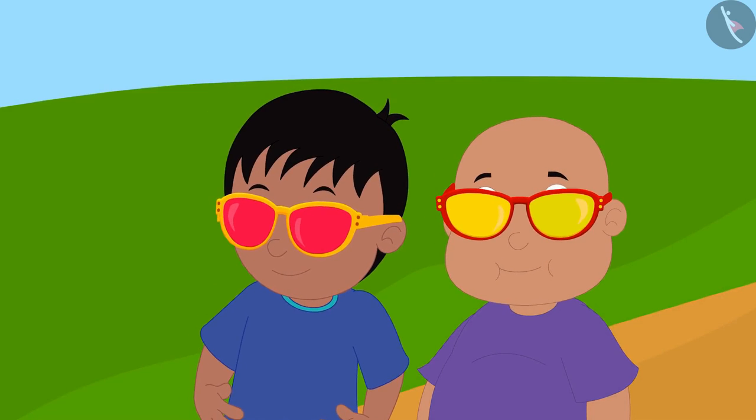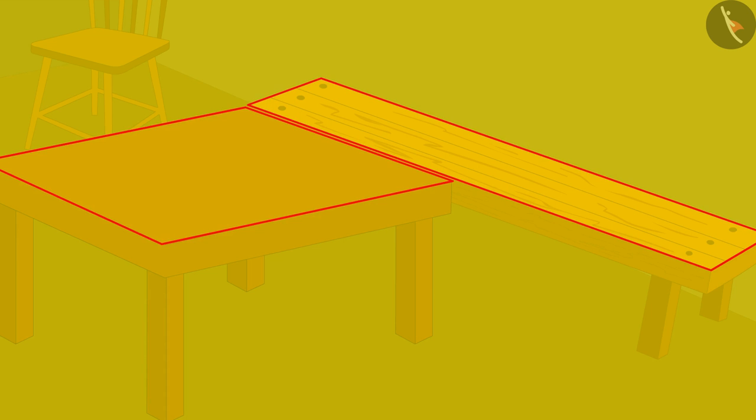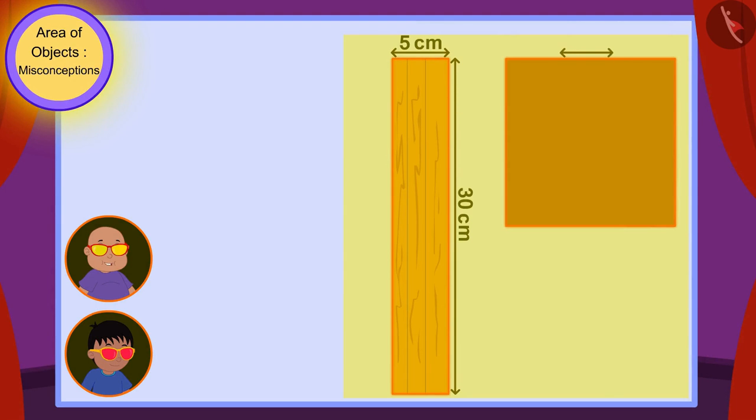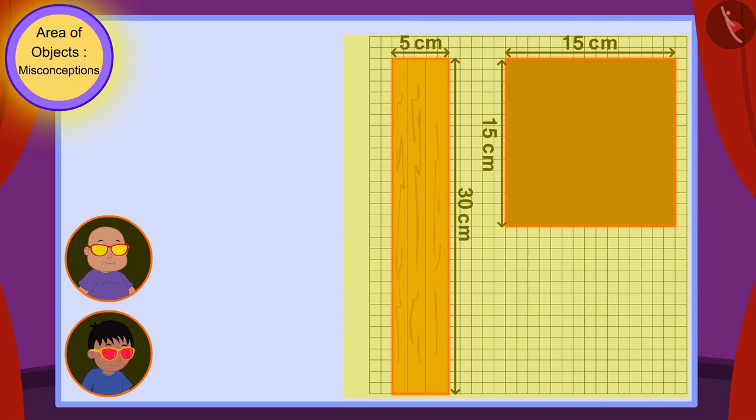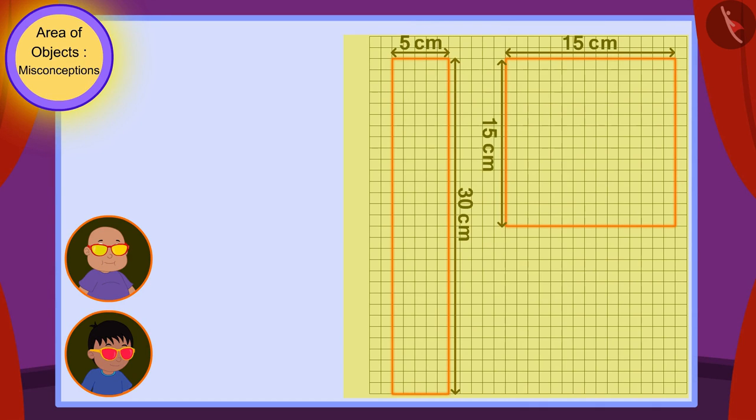Then Babalu saw the surfaces of those tables with his glasses. Raju, on looking through my glasses, I am able to see a grid paper being formed on the surfaces of these tables. We can find the area of the surfaces of these tables with the help of these. Babalu said excitedly.